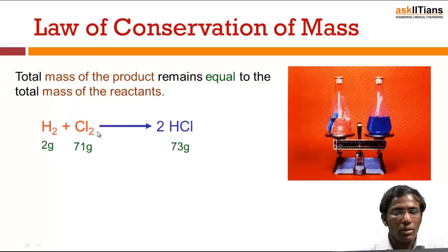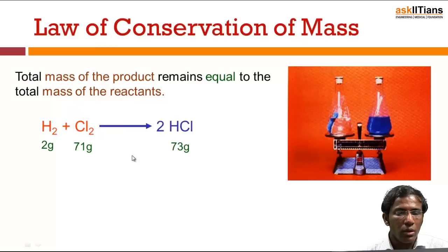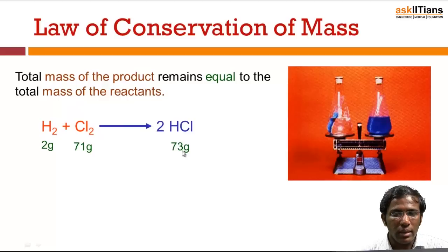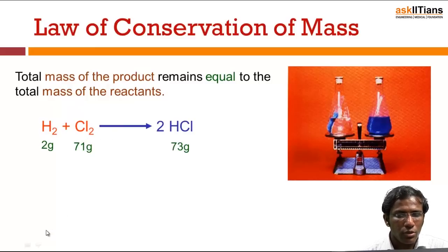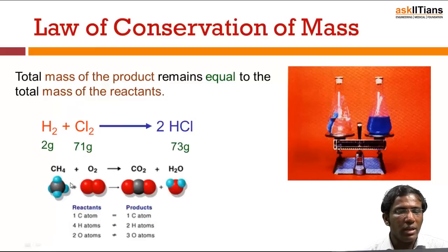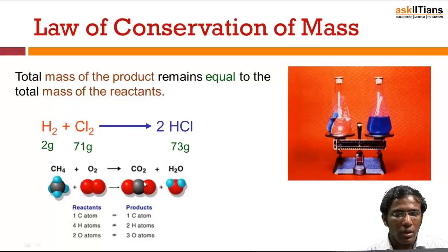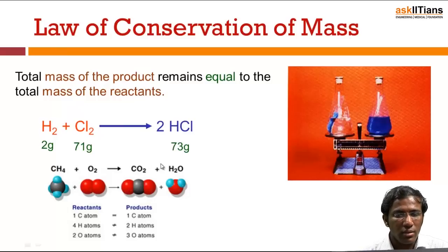Here hydrogen is 2 grams and chlorine is 71 grams — one mole each — and we get 2 moles of HCl, that is 73 grams. So the total mass of the reactants is 73 grams and the total mass of the products is also 73 grams. There is no change of mass during the reaction. This law is also used to balance any chemical reaction, such as methane reacting with oxygen to form carbon dioxide and water.